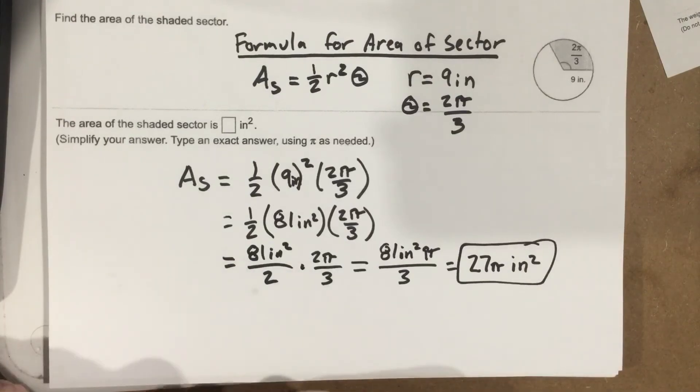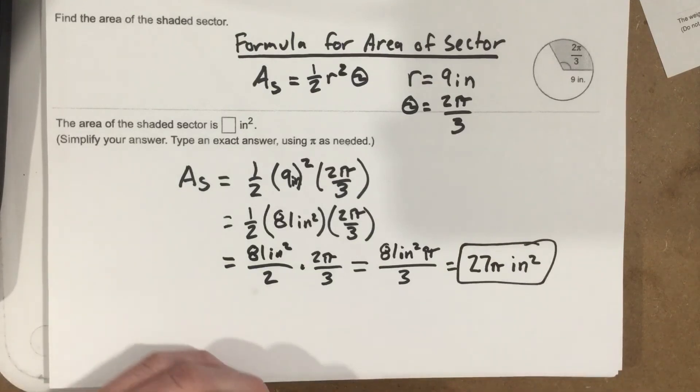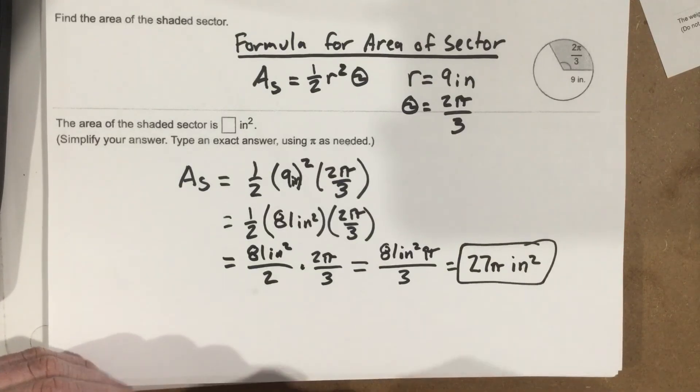And that's the answer — that's the area of the sector. So this area is 27π inches squared, or approximately 27 times 3.14.